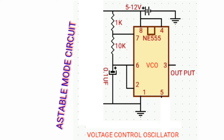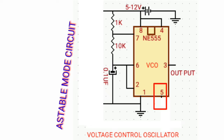So how could we control the frequency of the circuit? Simply, by controlling the control voltage at pin 5 by connecting a variable resistor. Then we have a VCO — voltage controlled oscillator — circuit.